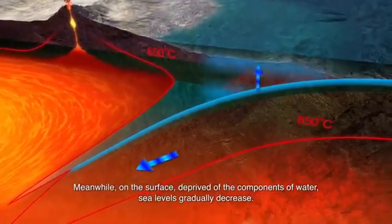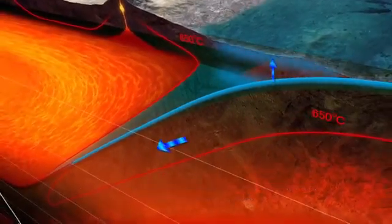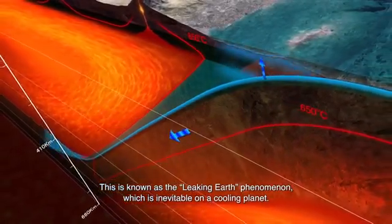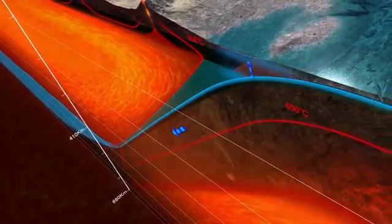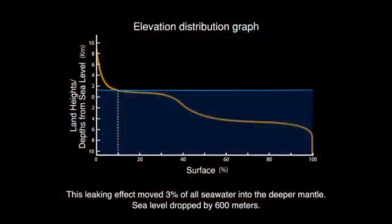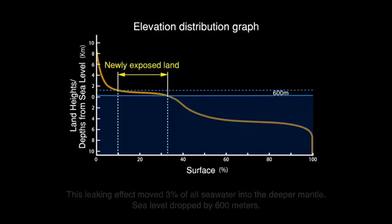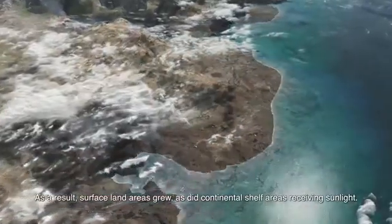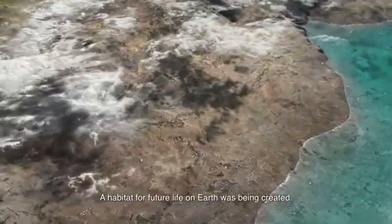When the inner Earth is hot enough, the components of water trapped in minerals in the oceanic plates are released to the surface environment, and the seawater level is unaffected. However, once the mantle temperature drops below 650 degrees Celsius, minerals carry these water components down into the upper mantle. Meanwhile, on the surface, deprived of the components of water, sea levels gradually decrease. This is known as the leaking Earth phenomenon, which is inevitable on a cooling planet. This leaking effect moved 3% of all seawater into the deeper mantle. Sea level dropped by 600 meters. As a result, surface land areas grew, as did continental shelf areas receiving sunlight. A habitat for future life on Earth was being created.